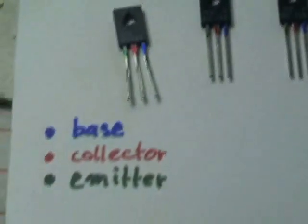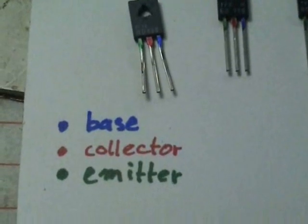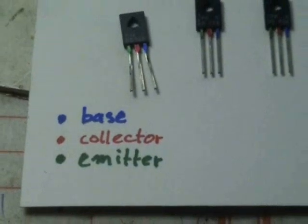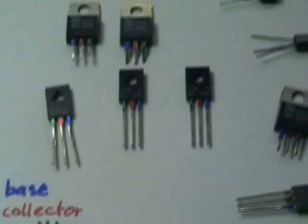I don't know how well the colors are picked up by the camera, but I usually make a habit of coloring the base blue, the collector red, and the emitter green, although you can omit the last one. It just makes it a lot easier.